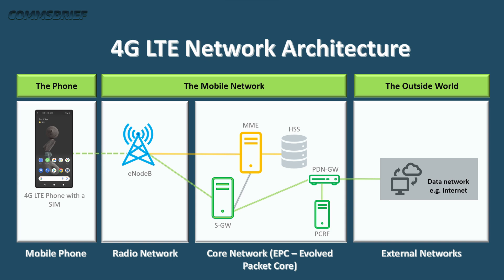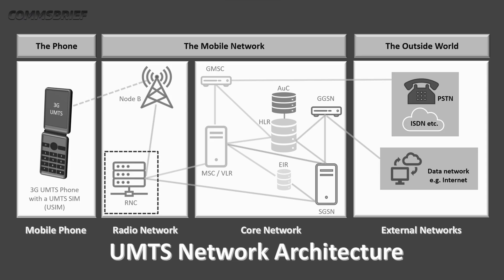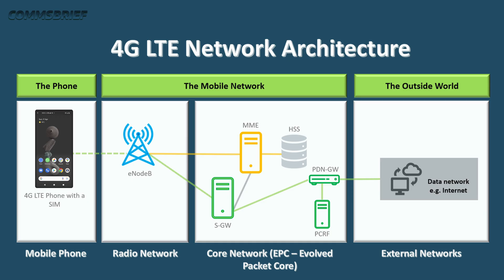As you may recall, the base station in 3G UMTS is called Node B, so in 4G it's called the evolved version — eNodeB. One very important aspect of eNodeB is that it is not only a base station but also a network controller. In 2G and 3G networks, there is a separate controller entity: the Radio Network Controller (RNC) in 3G, and the Base Station Controller (BSC) in 2G. In LTE, eNodeB handles both functions.